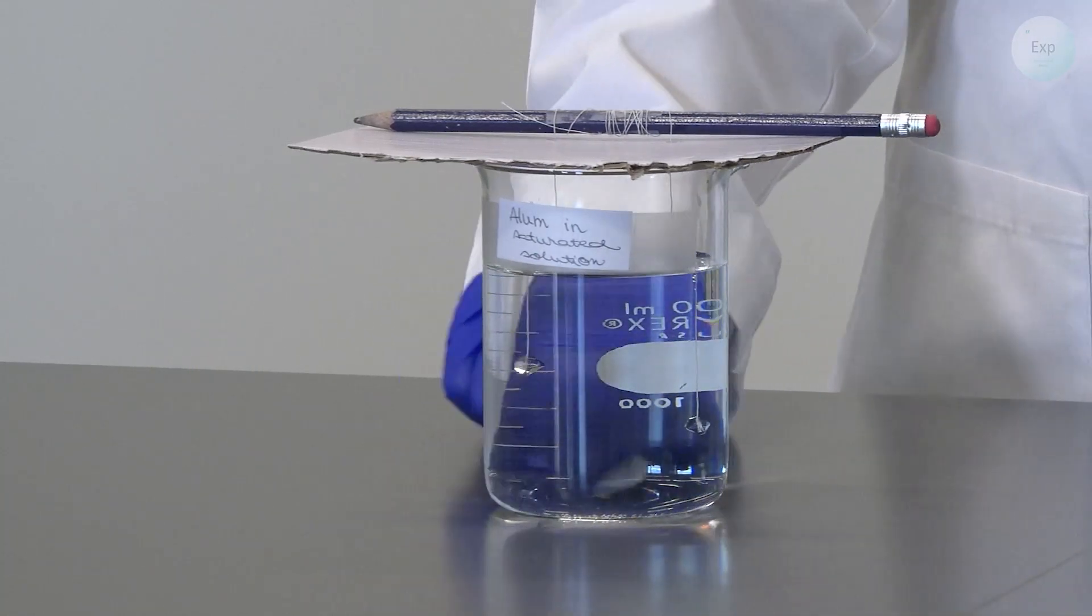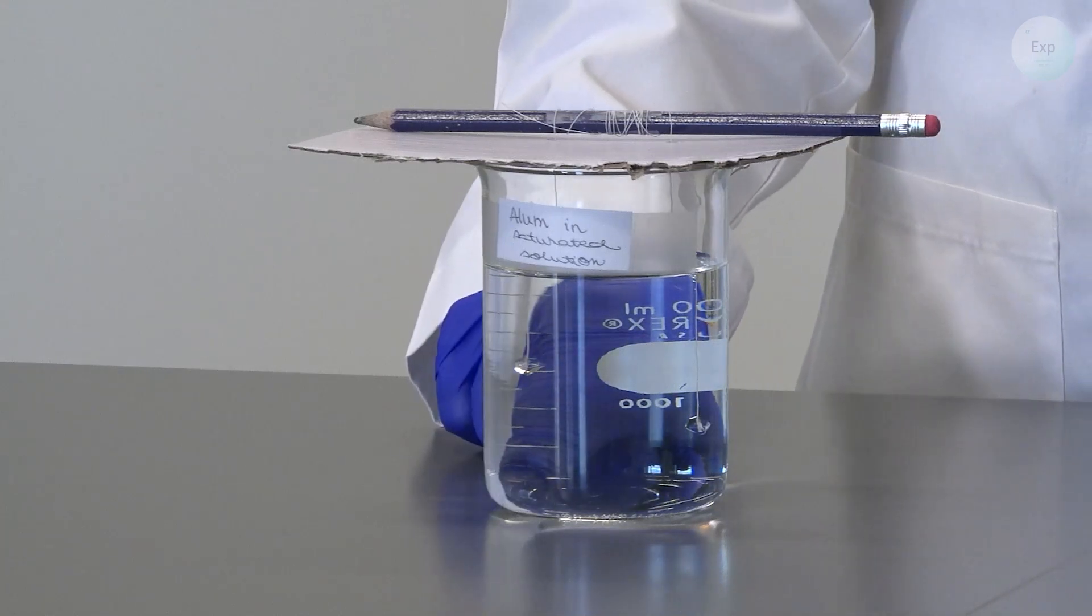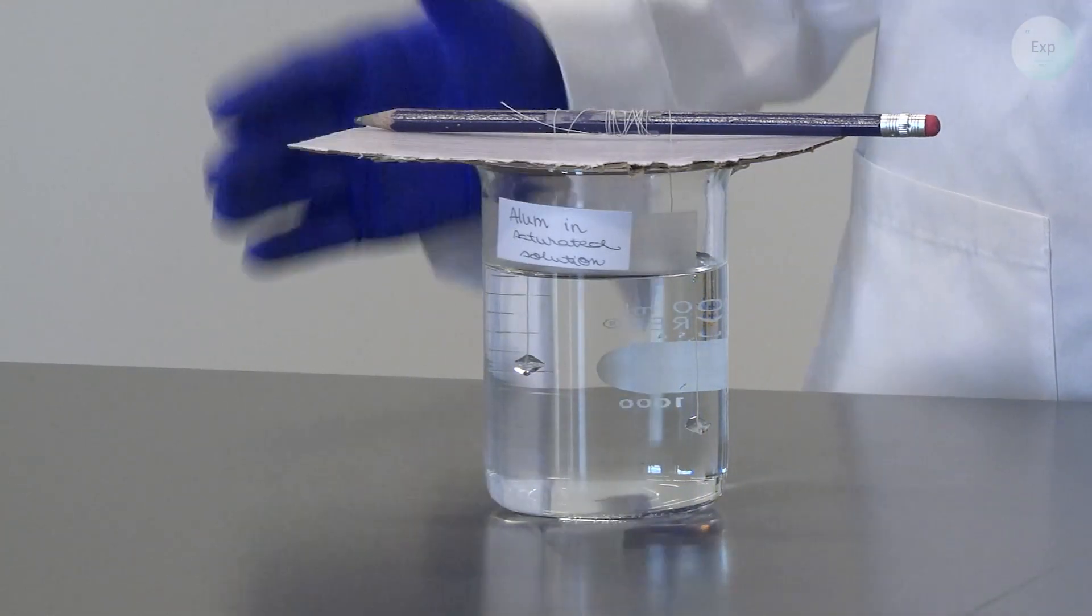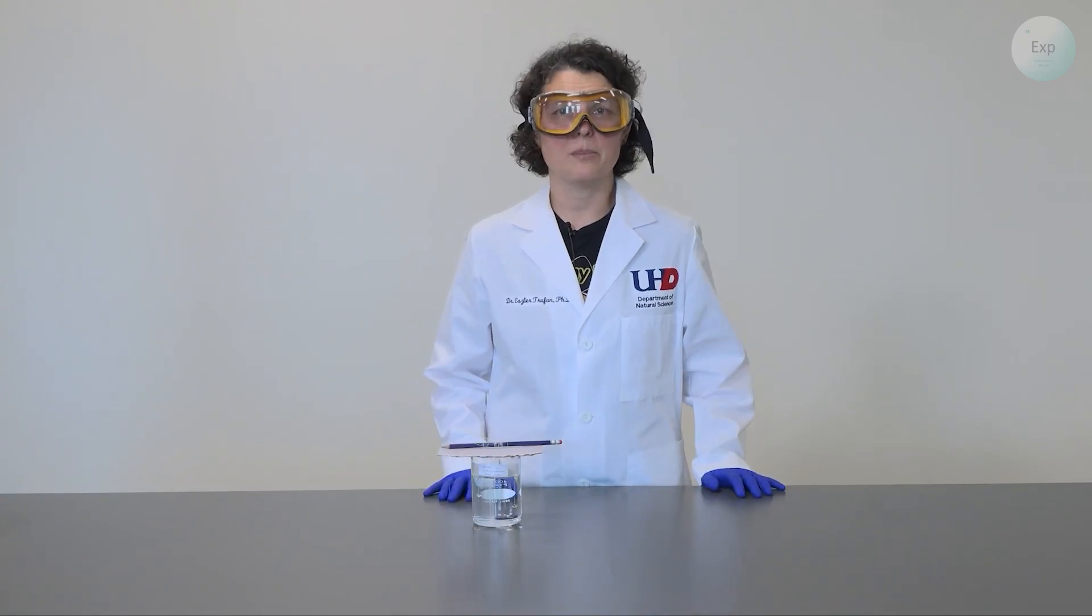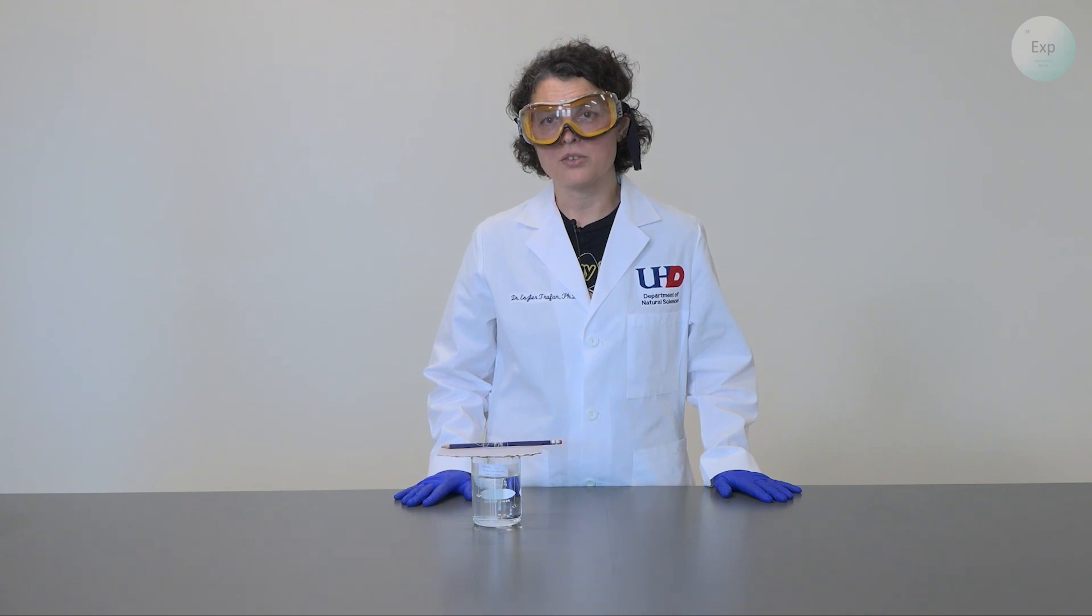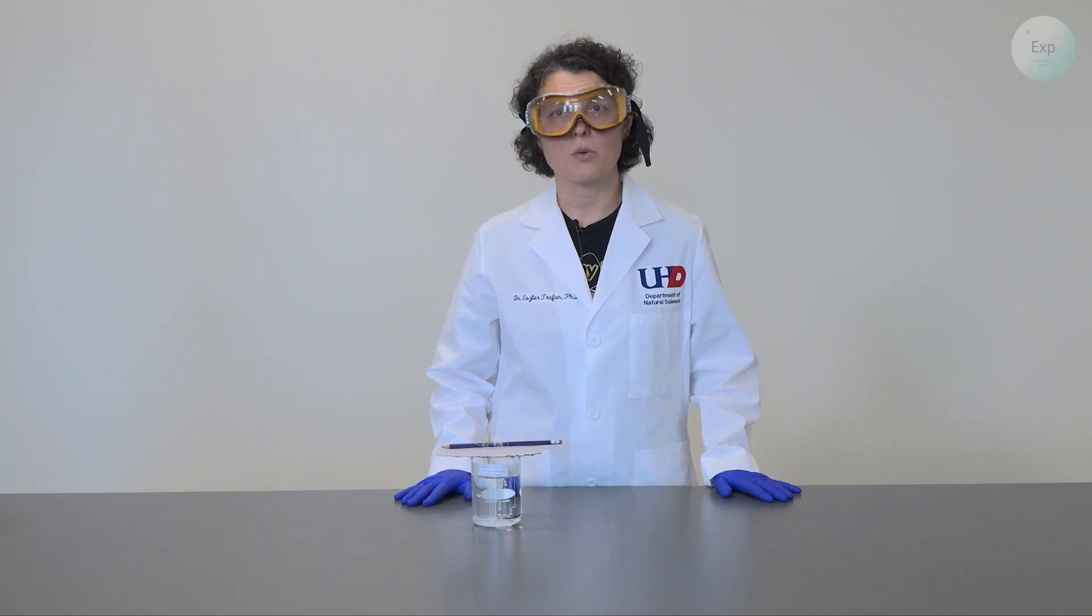You'll also notice that there may be some small crystals growing on the bottom, and there may be some small crystals growing on your thread. Now, all of those crystals that are in your solution are competing for growth. The more you have in there, the more difficult it will be for your large crystals to grow even bigger.